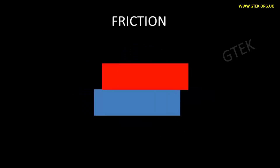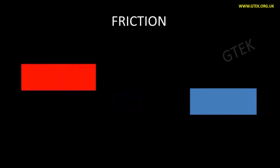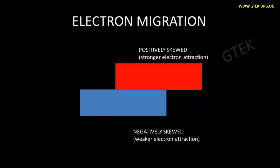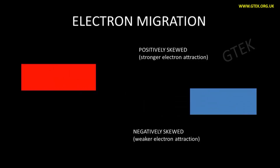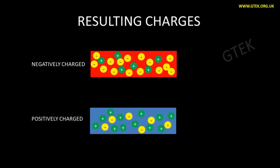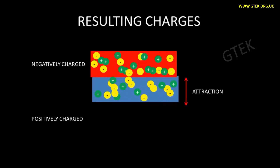This is the friction. You can see two objects with indication of red and blue. Red is the positively charged one and blue is the negatively charged one — that is nothing but stronger electron attraction and weaker electron attraction. The resulting charges are the negatively charged one and positively charged one. You can see the representation of negatively charged one with positive and negative ions, with the indication of green and yellow.